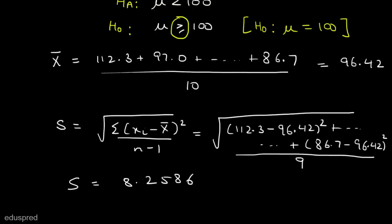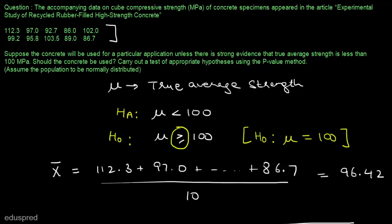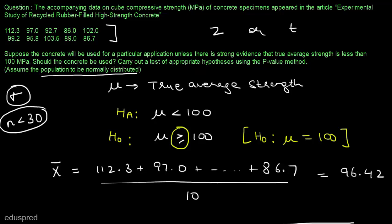Now let's move to step three — deciding which test statistic to use: z or t? We are given that the population is normally distributed. We don't know sigma, the population standard deviation. Also, n is not sufficiently large — n is less than 30; it equals 10. So in this case we have to use the t-test.